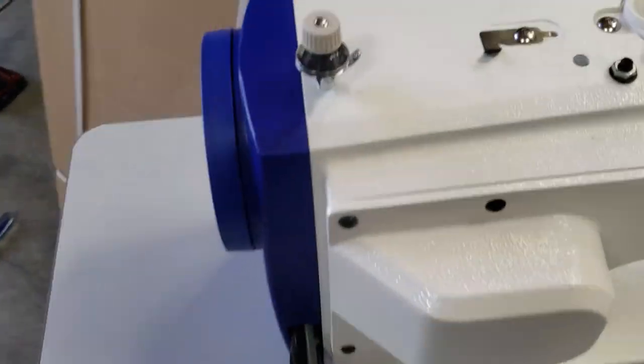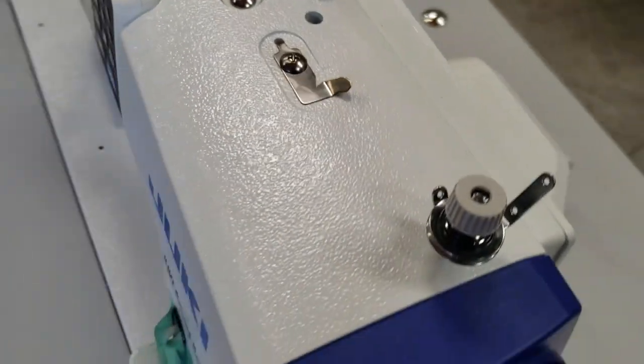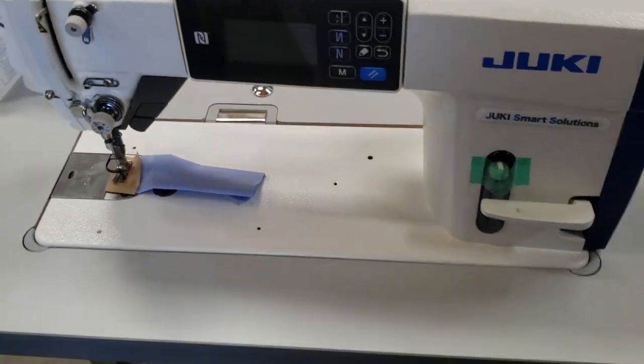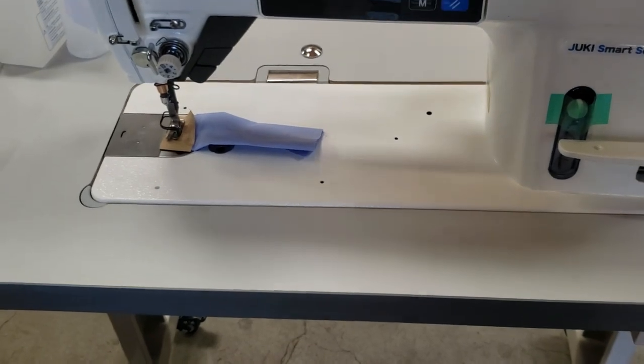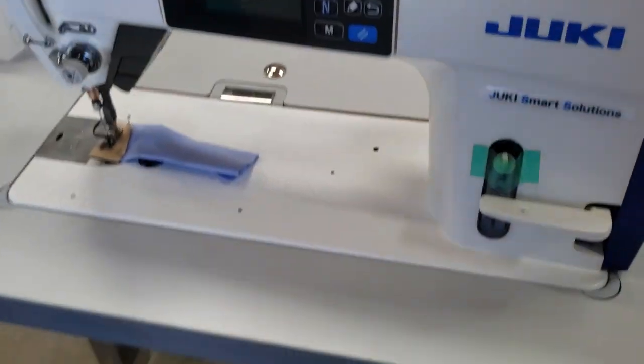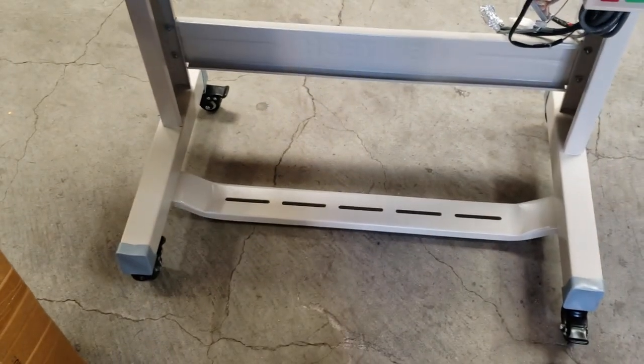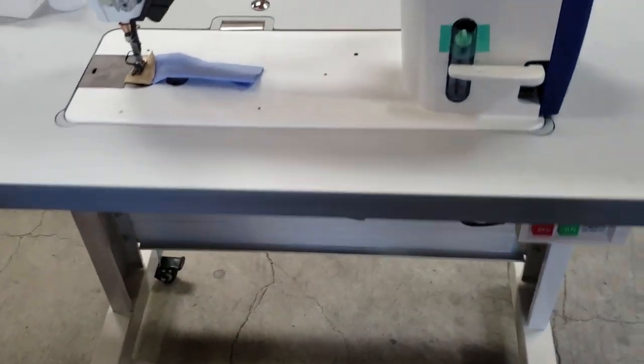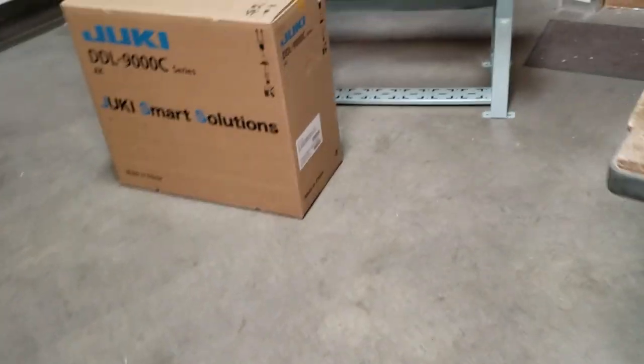This is a DDL 9000 C that we're gonna do. This one is with the K legs, the T legs with the wheels that I'm gonna show you. And this is the one that we're doing with the K legs.